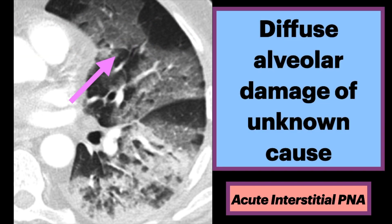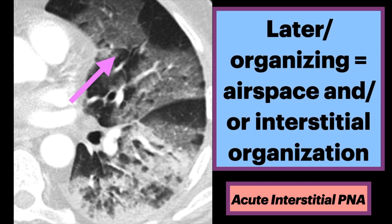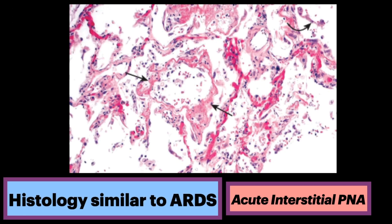This term is reserved for diffuse alveolar damage of unknown cause. The acute or exudative phase is characterized by edema and hyaline membrane formation. The later organizing phase is characterized by airspace and/or interstitial organization. Histology is similar to acute respiratory distress syndrome.